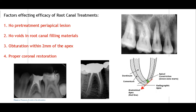Factors affecting the prognosis and efficacy of root canal treatment: firstly, there should be no pre-treatment periapical lesion — as seen in this picture, a periapical lesion can be resolved by root canal treatment, but the prognosis is better if no lesion was present. Secondly, there should be no voids in the root canal filling materials, as seen in this picture where a break in continuity of the obturation material could allow bacterial leakage.